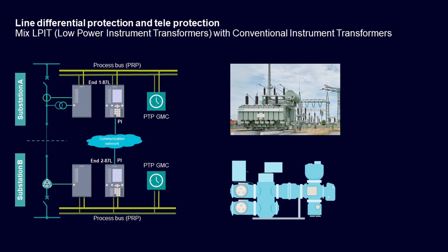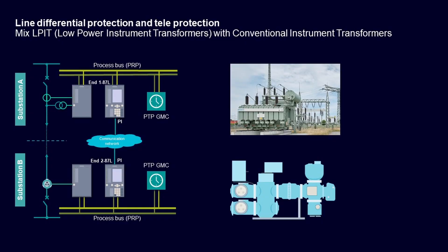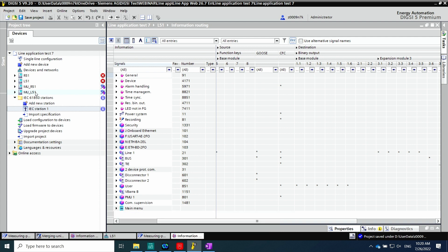We open DiGSI software to configure the SIPROTEC 5 devices and the merging unit. First, we have a look at the merging units. In one merging unit we have a low power instrument transformer (LPIT) from Siemens Energy, and the second merging unit is connected to a conventional instrument transformer. I will start with the merging unit connected to the LPIT, which is called L51.